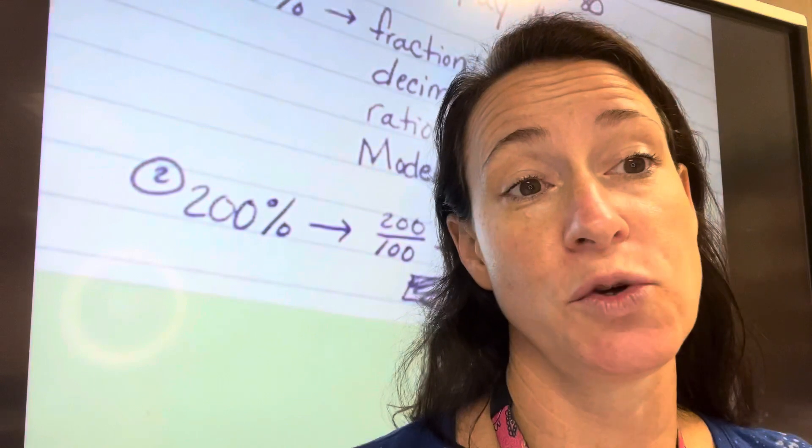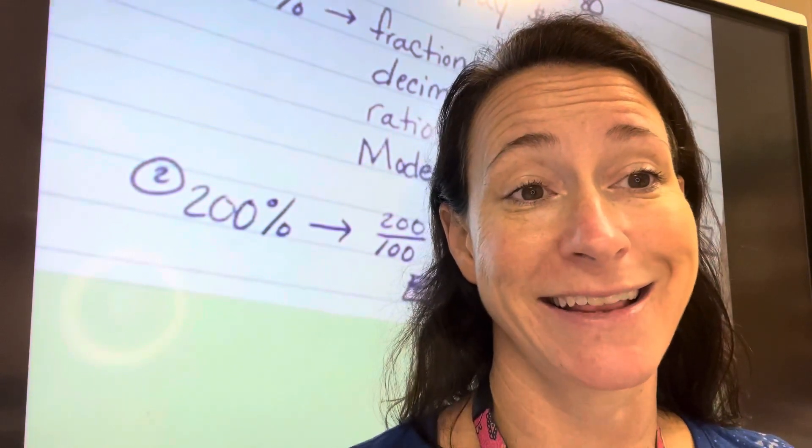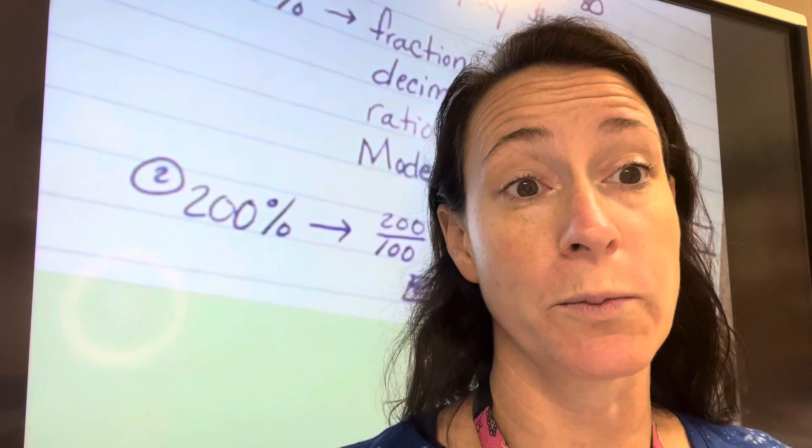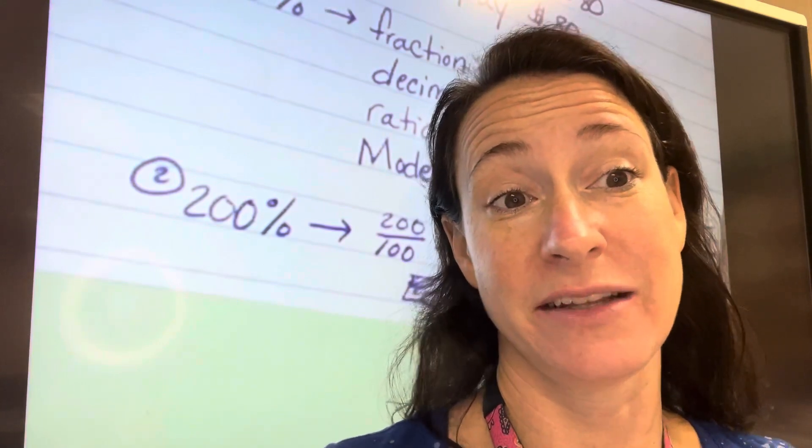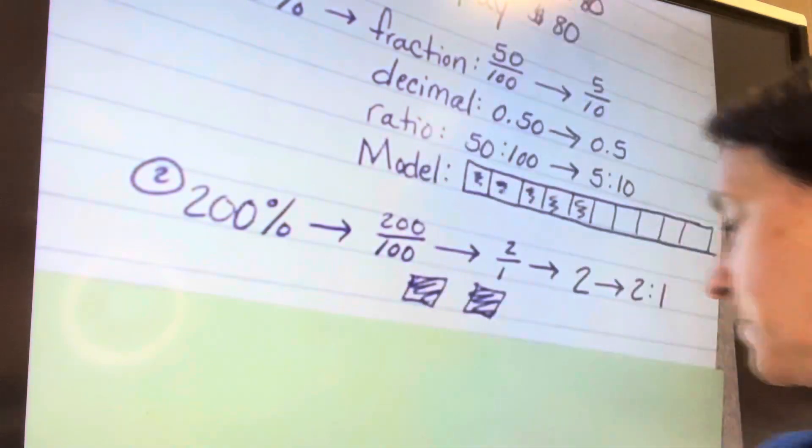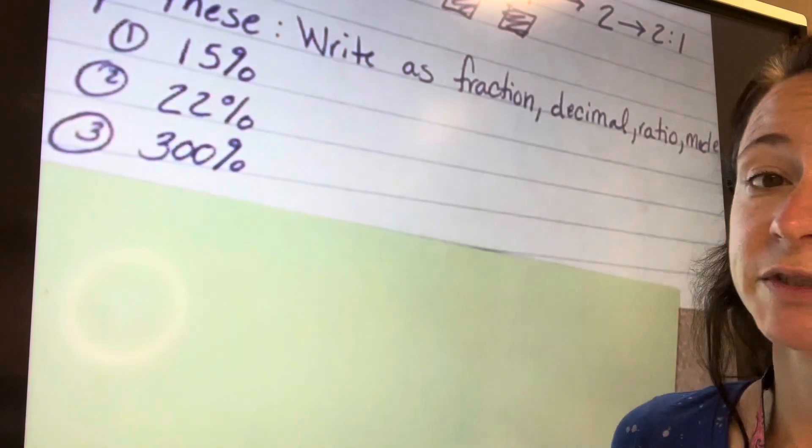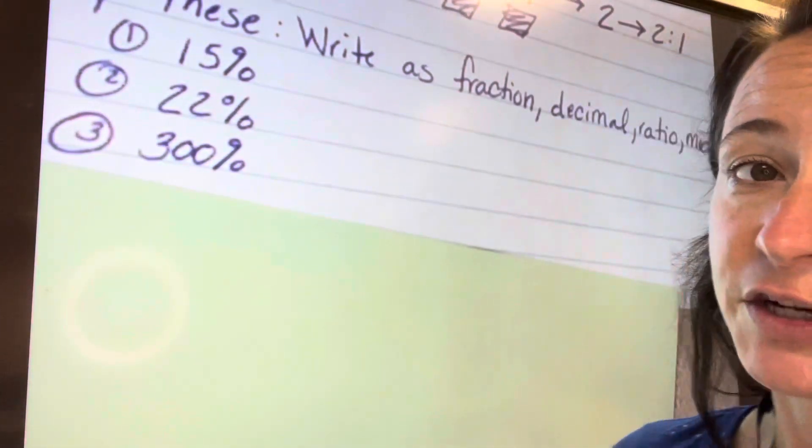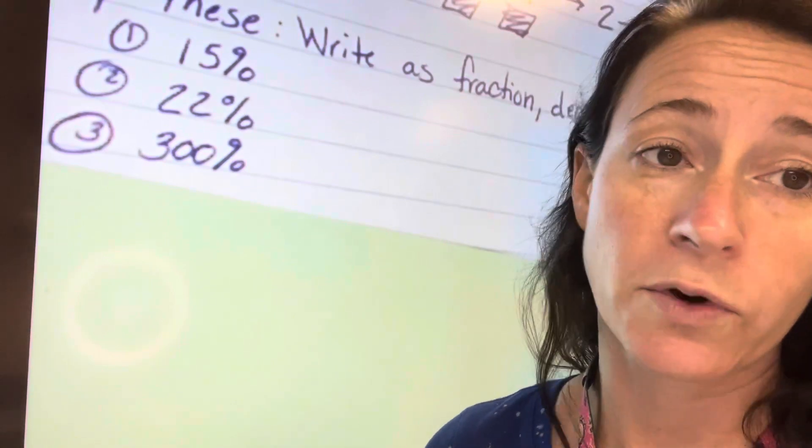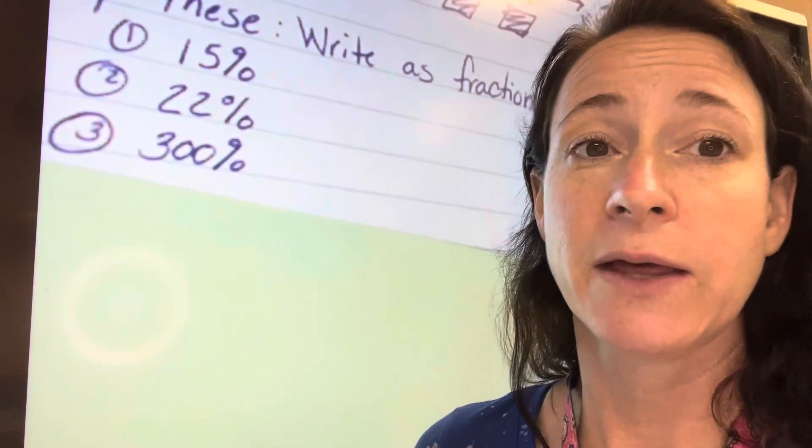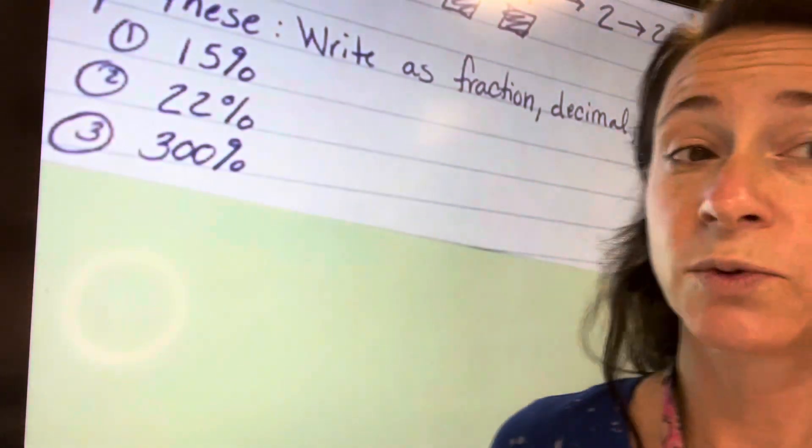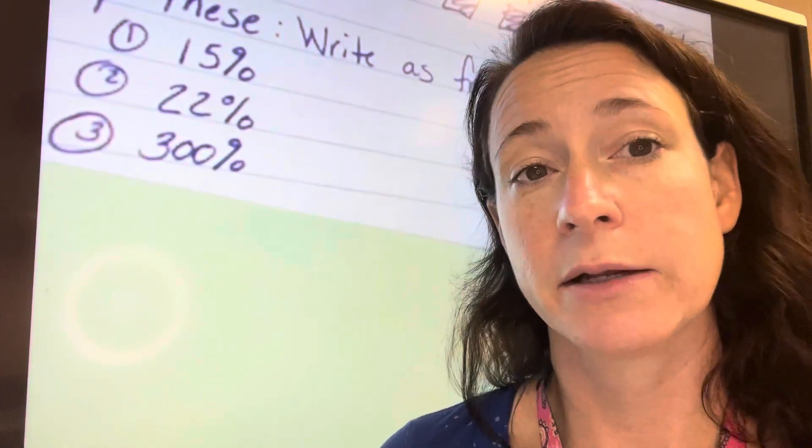You can have percents that are more than one, and you can have percents that are less than the whole. So I want you guys to try these. Just practice three percents. You're going to write them as a fraction, as a decimal, as a ratio, and model them. So I have 15%, 22%, and 300%. You're just going to write it as a fraction, then write it as a decimal, and then write it as a ratio, and then see if you can model it.